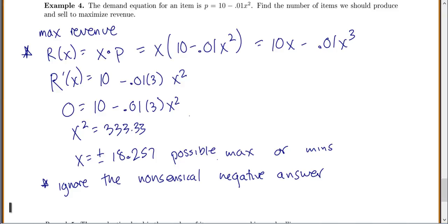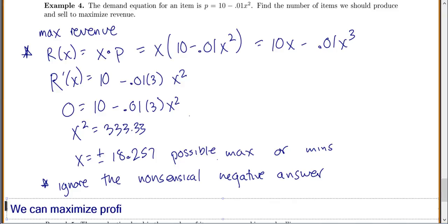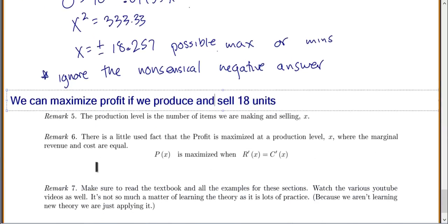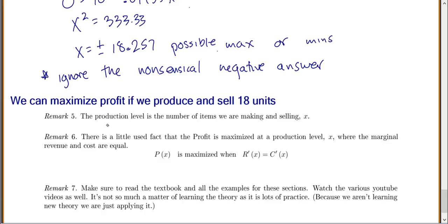Our final answer is we can maximize revenue if we produce and sell 18 units. Note: 'production level' means how many items we're making and selling. Also, profit is maximized at the production level x where marginal revenue and marginal cost are equal — where r′ equals c′. Finally, make sure you're reading the textbook examples and watching additional YouTube videos. We don't have much new theory; we're applying what we've learned, and the only way to get good at applying is seeing and doing lots of examples.